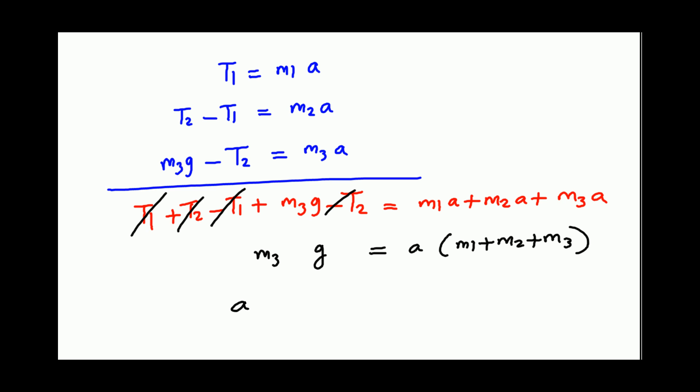Or we get A is equal to M3 divided by M1 plus M2 plus M3 times g. So that is your acceleration.